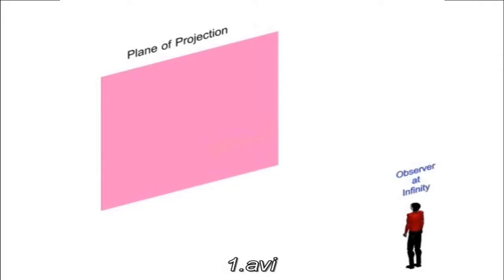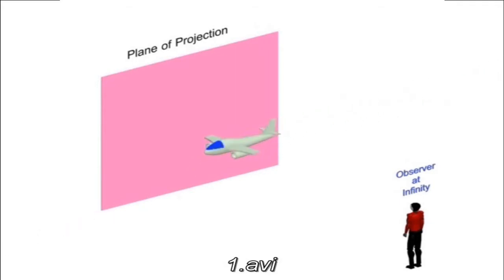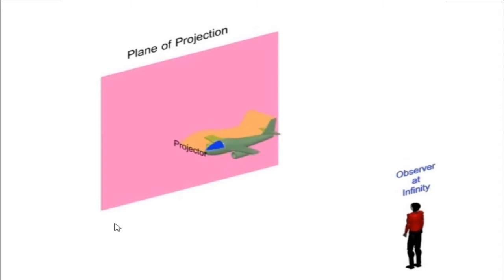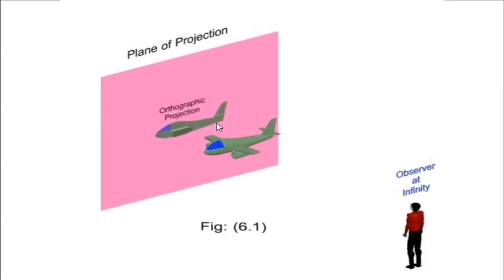We will see that in the video. Here, we are considering an aircraft in space and its projection on an imaginary plane. We are projecting the particles in that aircraft towards this plane — these are the projectors. All the infinite number of projectors you have to consider, and you are getting the 2D shape of the aircraft on the imaginary plane.